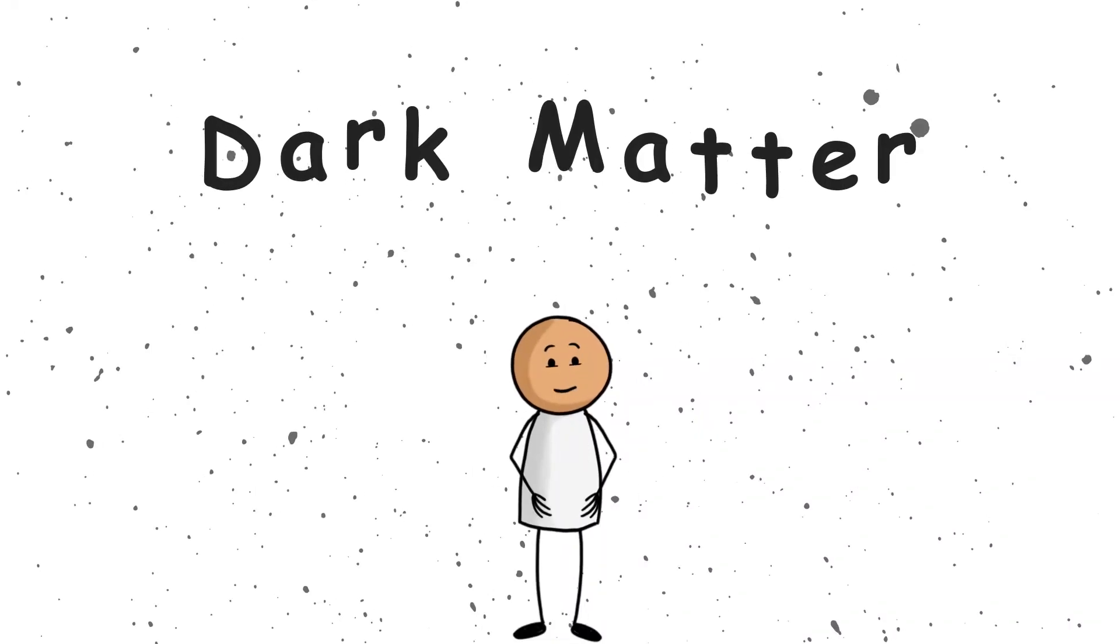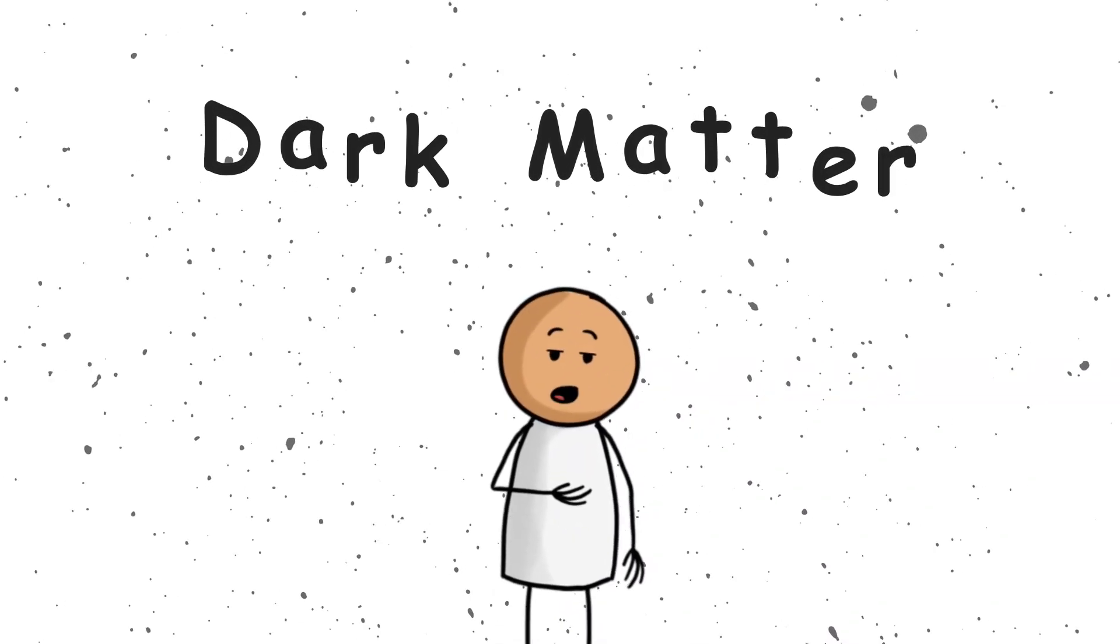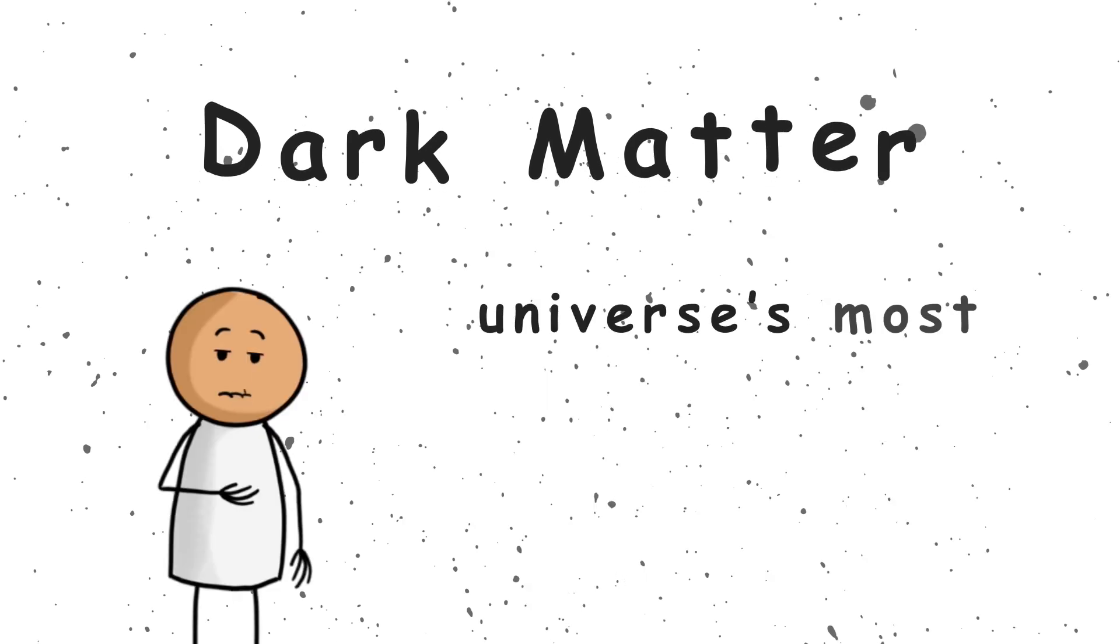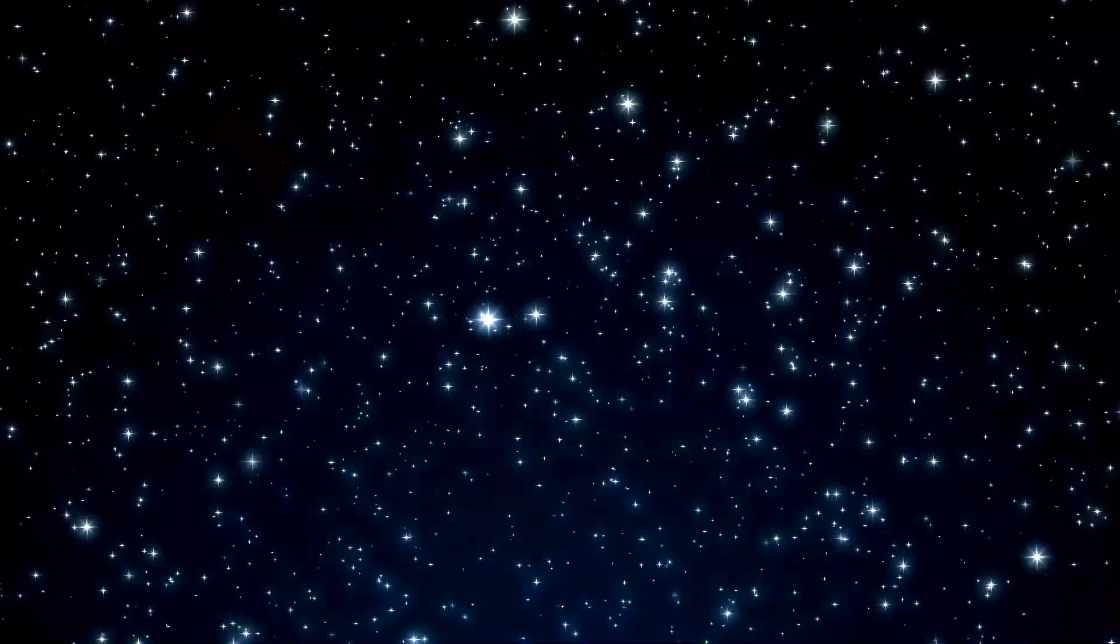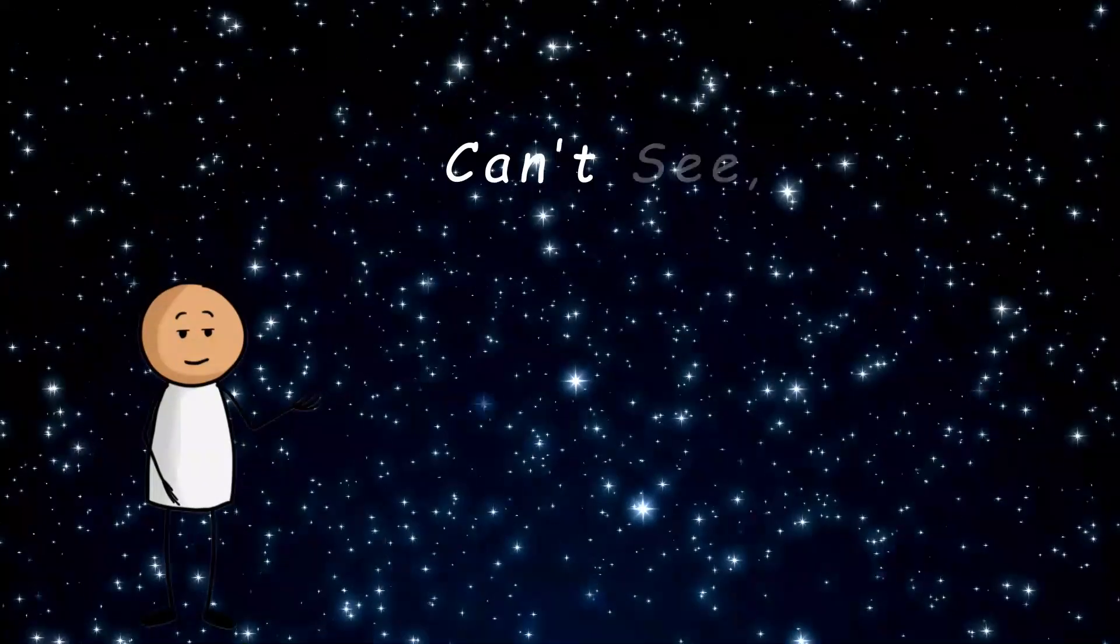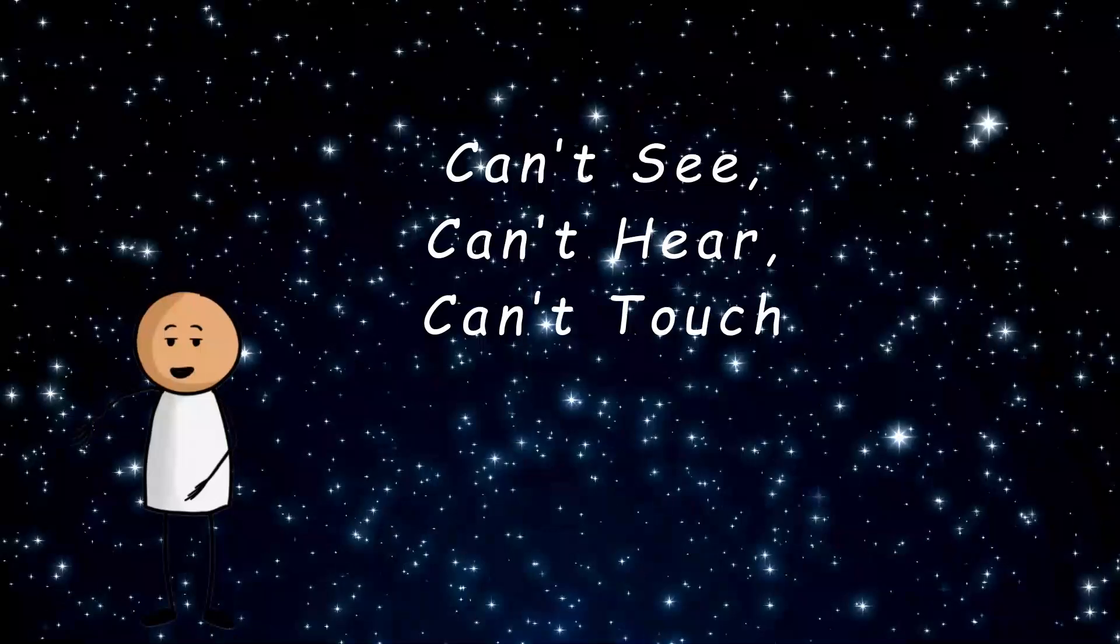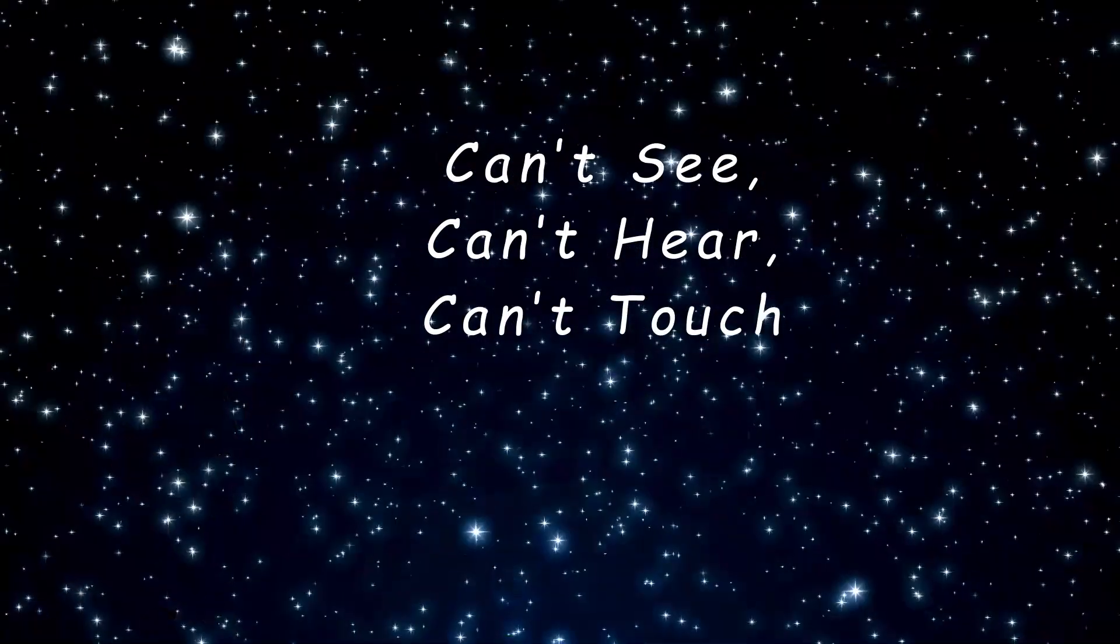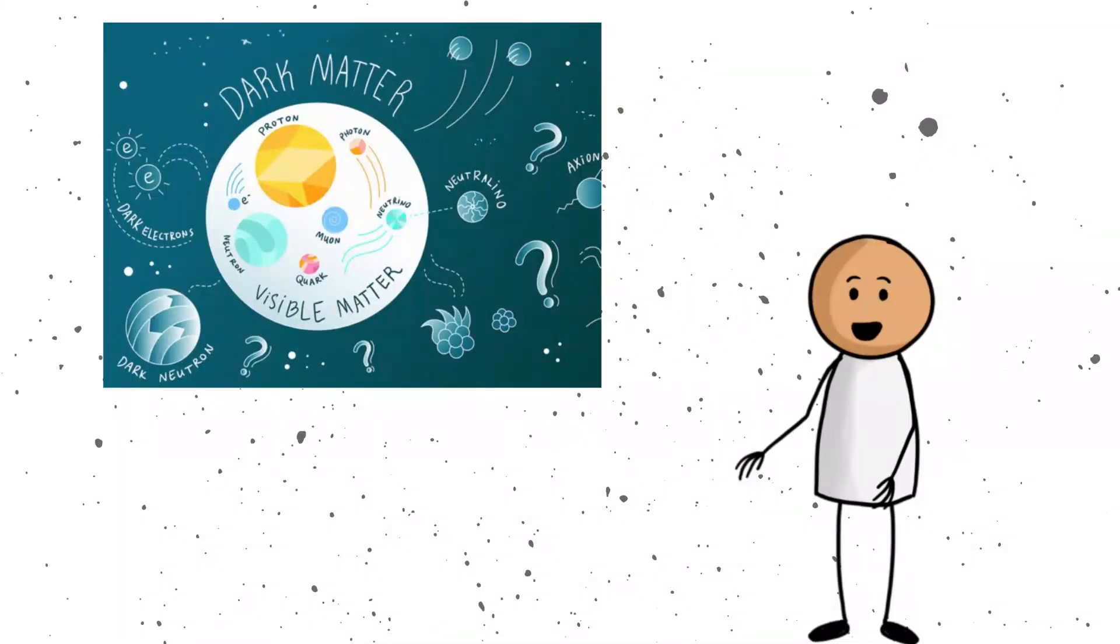Number 1. Dark Matter. Alright folks, first up on our list of cosmic curveballs is dark matter, also known as the universe's most skilled magician. Imagine you are playing hide-and-seek with a cosmic ninja. You cannot see them, you cannot hear them, and you definitely cannot touch them. But somehow, you know they are there, because they keep moving stuff around when you are not looking. That is basically dark matter.